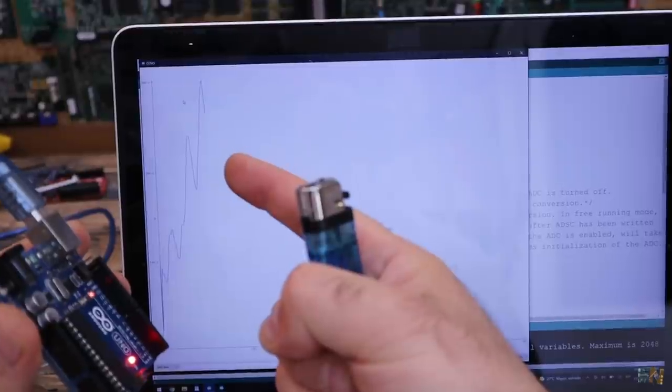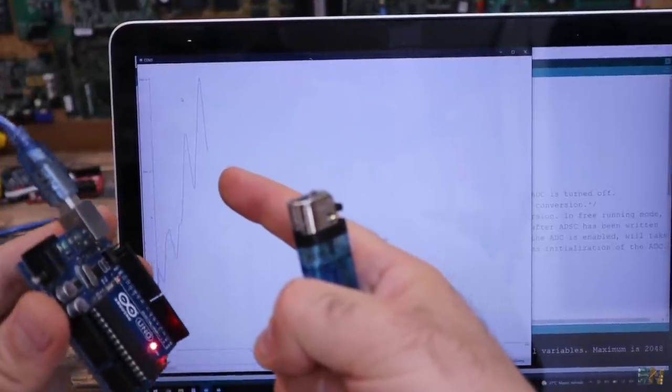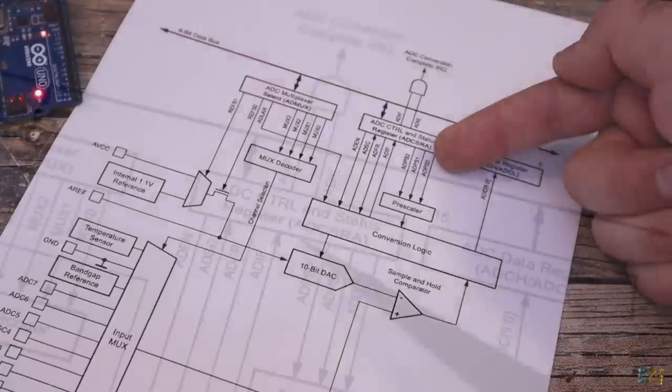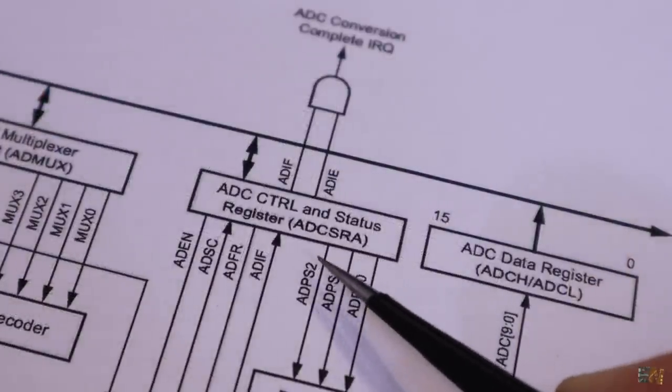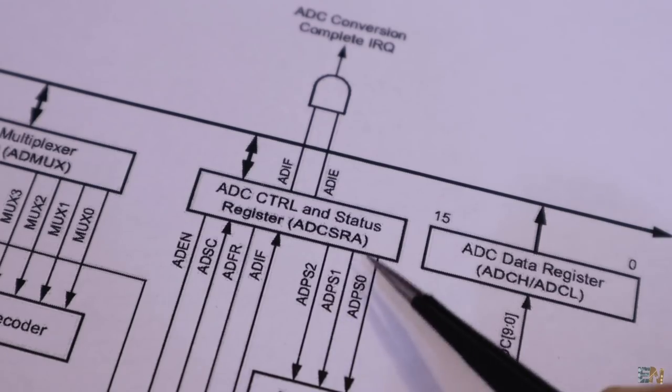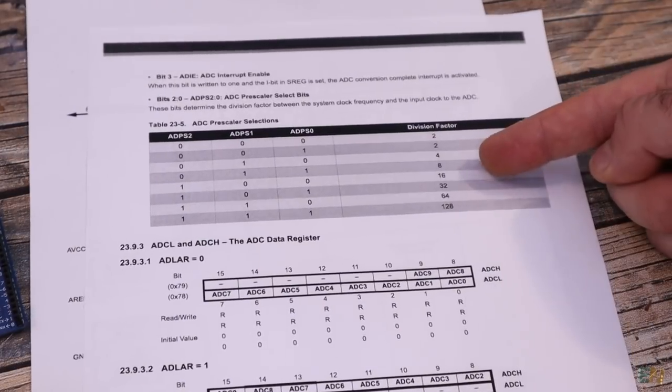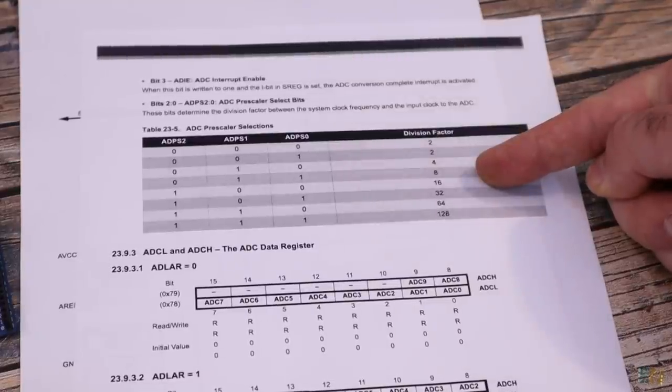So one more thing. If you want to change the sample rate of the ADC, you can do that by changing the prescaler. That is controlled with the ADCSRA register as well with the first 3 bits. So according to this table, you can set the prescaler to be from 2 up to 128.